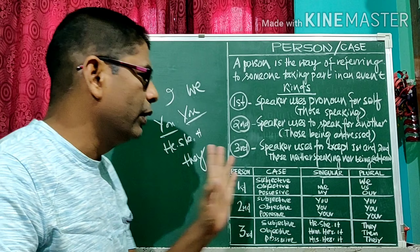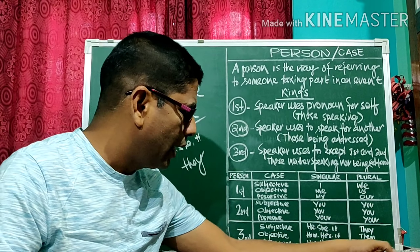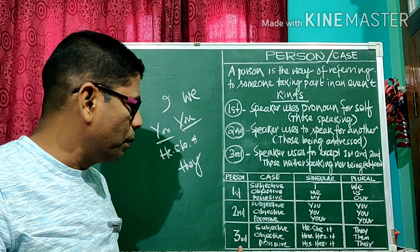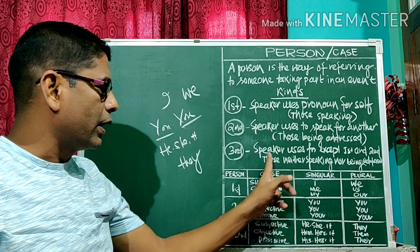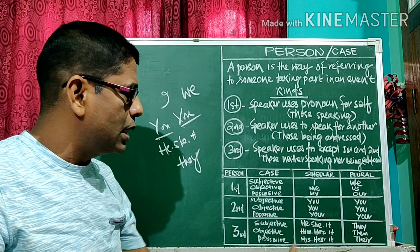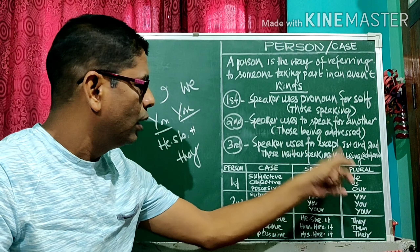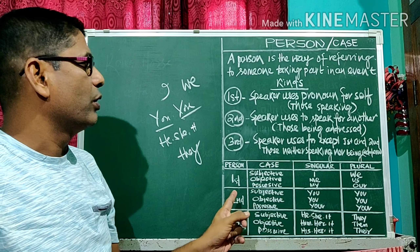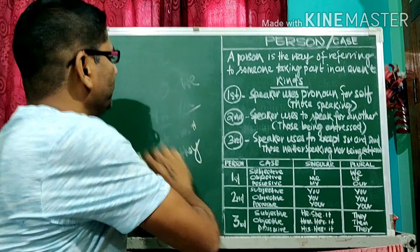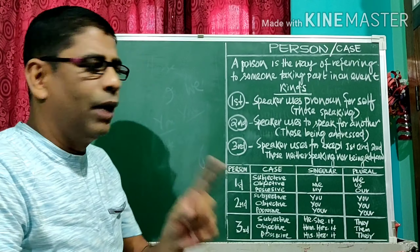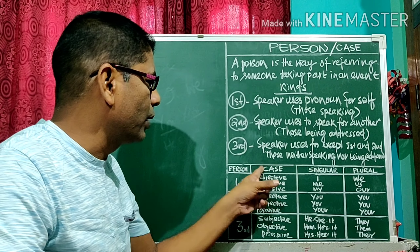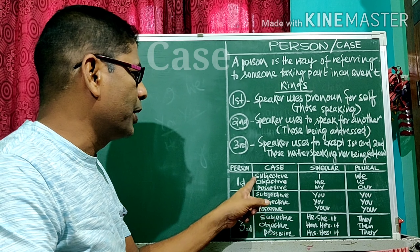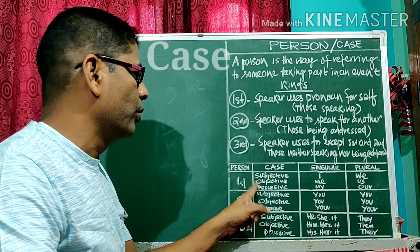I will give you a chart. In this chart it is clear what are the kinds of person, what are the kinds of case, and what are the singular and plural forms related to case and person. There are three kinds of cases: subjective, objective, and possessive.